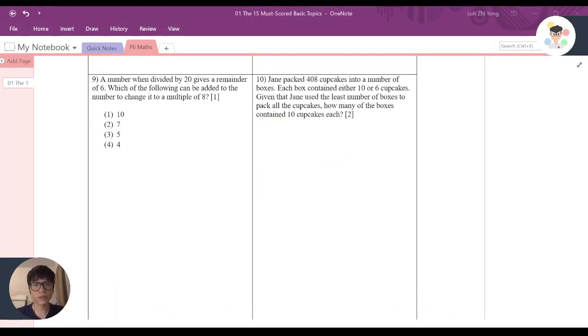Okay welcome back to digital class and today we'll be discussing Booklet 1, the 15 Must-Score Basic Topics, page number 9, question number 10. So let's look at this question together. It says that Jane packed 408 cupcakes into a number of boxes. Now each box can contain either 10 or 6 cupcakes.